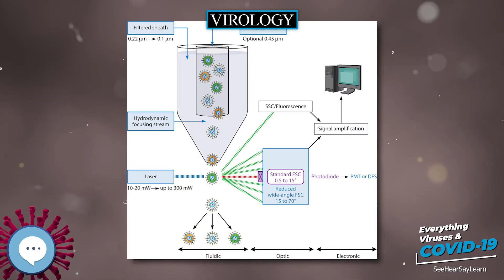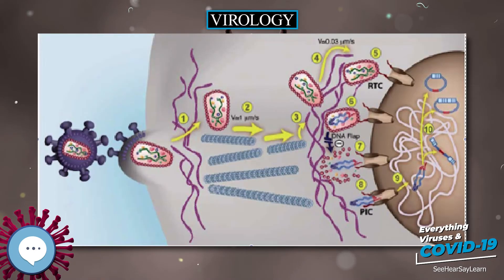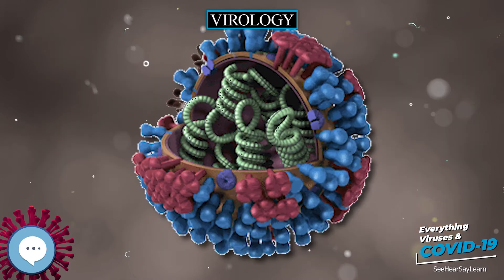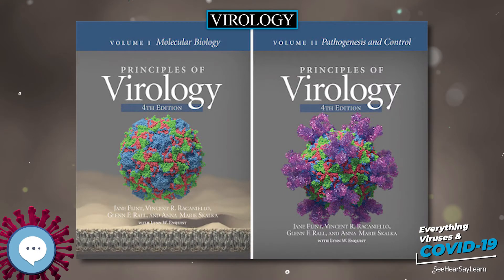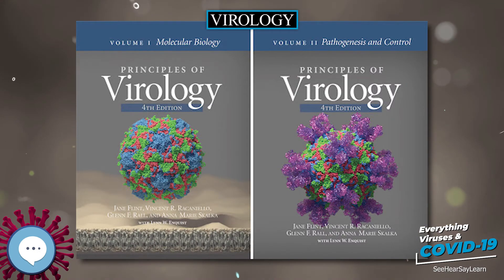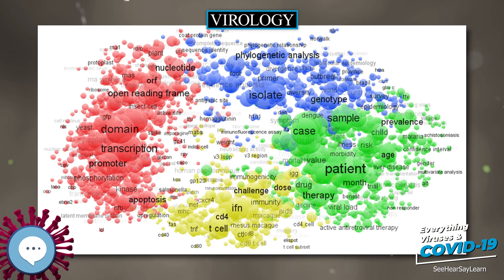Bacteriophages, the viruses which infect bacteria, can be relatively easily grown as viral plaques on bacterial cultures. Bacteriophages occasionally move genetic material from one bacterial cell to another in a process known as transduction, and this horizontal gene transfer is one reason why they served as a major research tool in the early development of molecular biology. The genetic code, the function of ribozymes, the first recombinant DNA and early genetic libraries were all arrived at using bacteriophages.